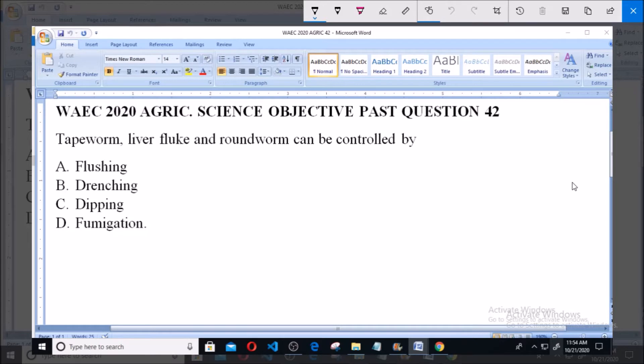So these four options given to us are methods or management practices that are used for one reason or the other. So let's see which of them is used to control Tapeworm, liver fluke and roundworm.